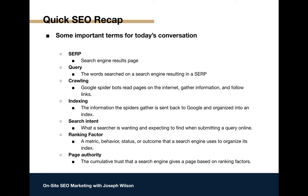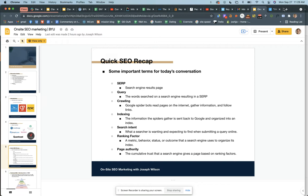Google uses hundreds of different indicators to help inform its index — you'll hear them called ranking factors or ranking signals. Google wants you to use keywords on your page — that's a ranking factor. If the URL includes those keywords — ranking factor. If your pages have images because people like images — ranking factor. A ranking factor is anything that Google uses to inform its ranking index. Think of it like a rubric for an essay — whatever items are on the rubric are ranking factors for Google.